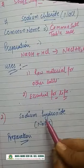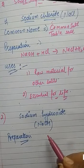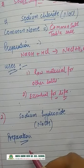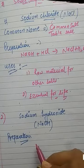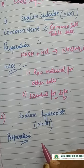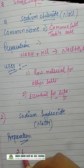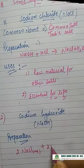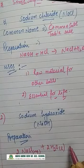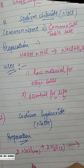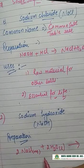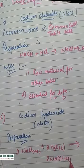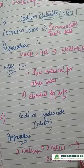The second salt is sodium hydroxide, NaOH. Its common name is caustic soda. How is it prepared? When electricity is passed through an aqueous solution of sodium chloride — that is, brine — it decomposes. This process converts the aqueous solution of sodium chloride into sodium hydroxide.